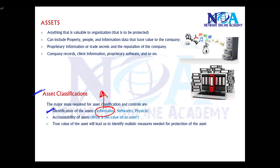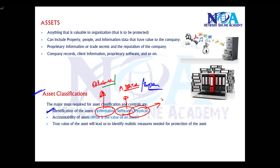Information-based assets include databases, database files, or documentation which defines the operations and procedures of the company. It can also be software assets like application software used in the company, system-related software like operating systems or MS Office applications. Or it can be physical assets, which deal with all physical components including computers, modems, routers, switches, air conditioners, or power supplies.